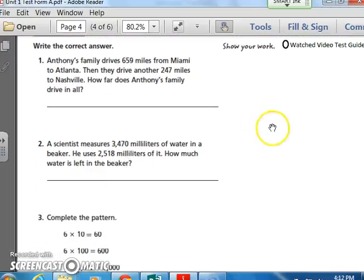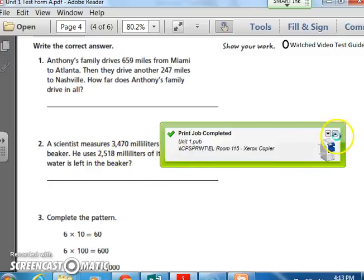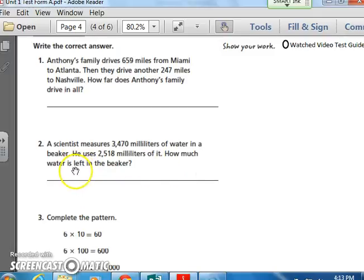All right, number two. And please show your work over here. Don't erase anything. Show all your work here. A scientist measures 3,470 milliliters of water in a beaker. He uses 2,518 milliliters of it. How much water is left in the beaker? So put yourself in that situation. You're the scientist. The scientist is going to measure 3,470 milliliters of water in a beaker. Maybe you could write something down or circle something. Then he uses 2,518 milliliters of it. Not sure what he does with all that, but he uses this much. How much does he have left? How much water is left in the beaker? Pause the recording and mark your answer.